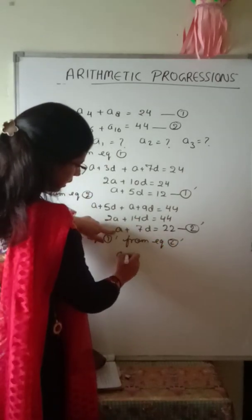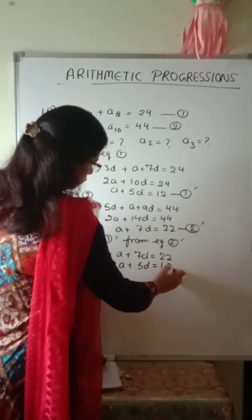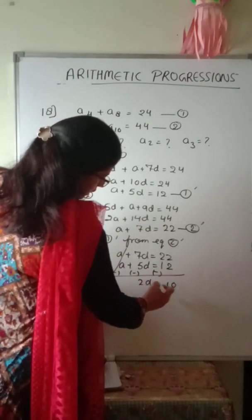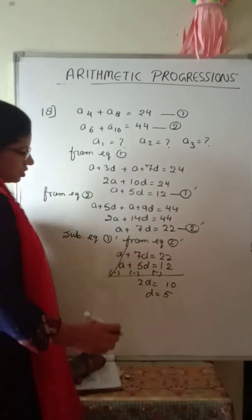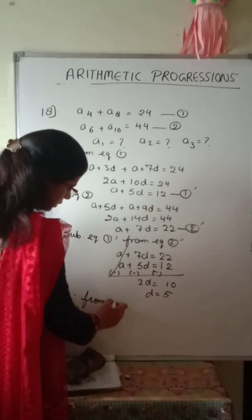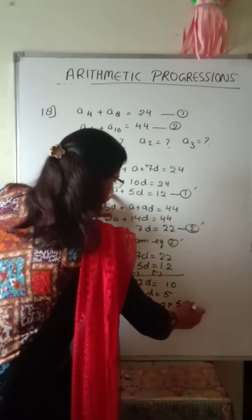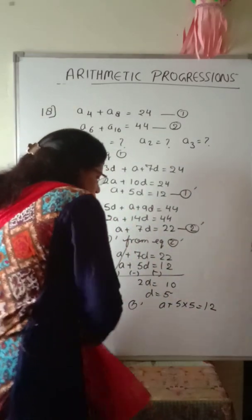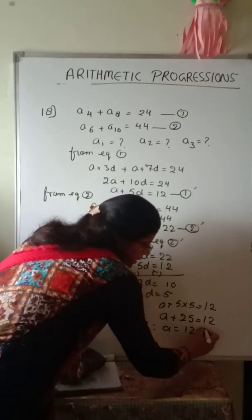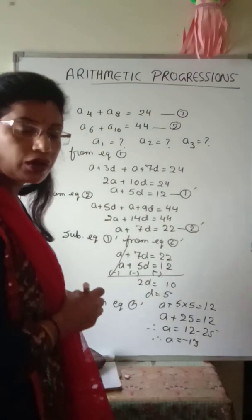A plus 7D equals 22 minus A plus 5D equals 12: A cancels out, 2D equals 10, so D equals 5. Substituting D equals 5 into equation 1 dash: A plus 5 into 5 equals 12, so A plus 25 equals 12, giving A equals 12 minus 25, therefore A equals minus 13.